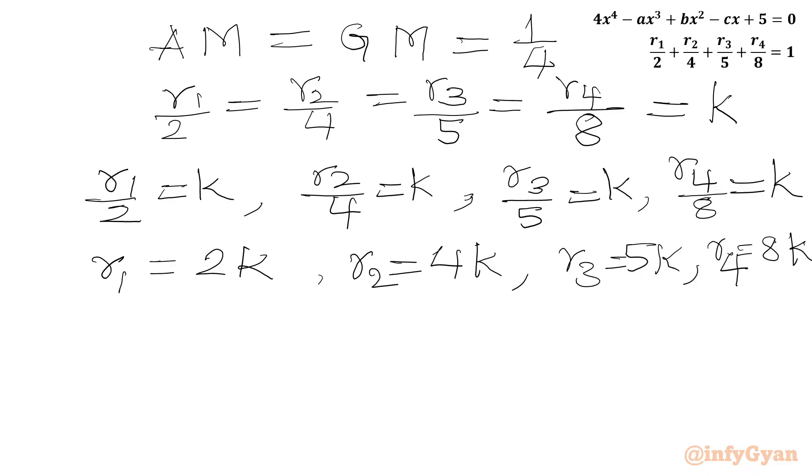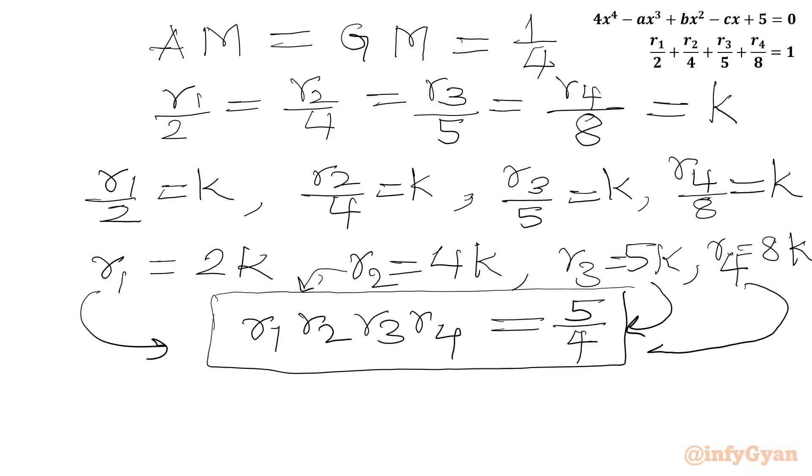Now we will use product of roots equation, which was R1 times R2 times R3 times R4 equals 5 over 4. Now we are going to put R1, R2, R3, and R4 in terms of k. We will get 2k times 4k times 5k times 8k equal to 5 over 4.